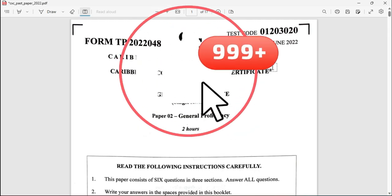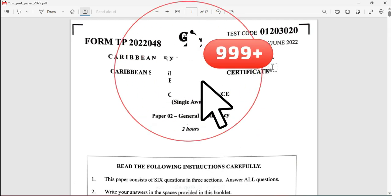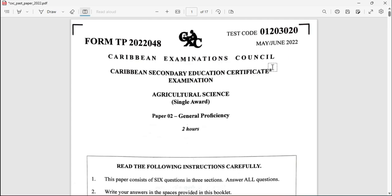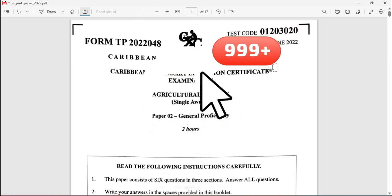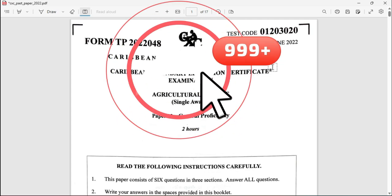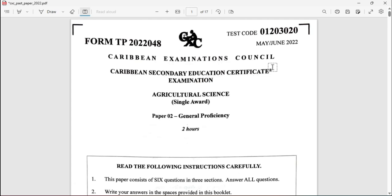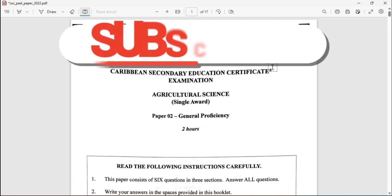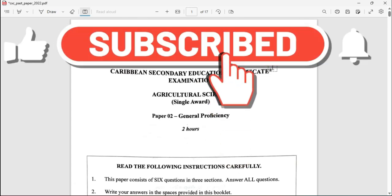Welcome to CSEC Biology TCP. I am Mr. Wilson from the TCP Academy. Today we're looking at the May-June 2022 paper for Agricultural Science Award. In this video we're going to be looking at number six.